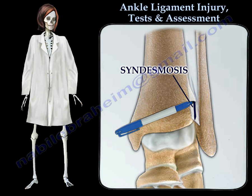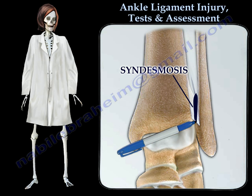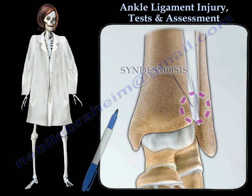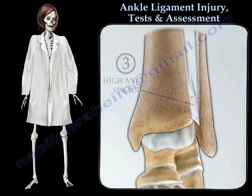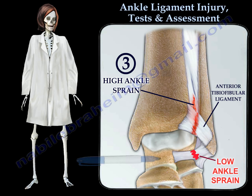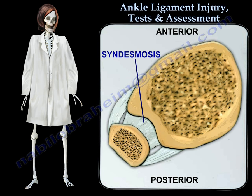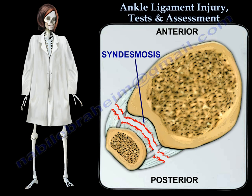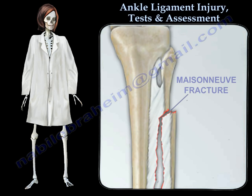The final area of injury is the syndesmosis. Injury to this area is referred to as a high ankle sprain. Contrary to a low ankle sprain, a high ankle sprain may require surgery. This is how injury to the syndesmosis occurs. Always check the fibula proximally to avoid missing a Maisonneuve fracture.